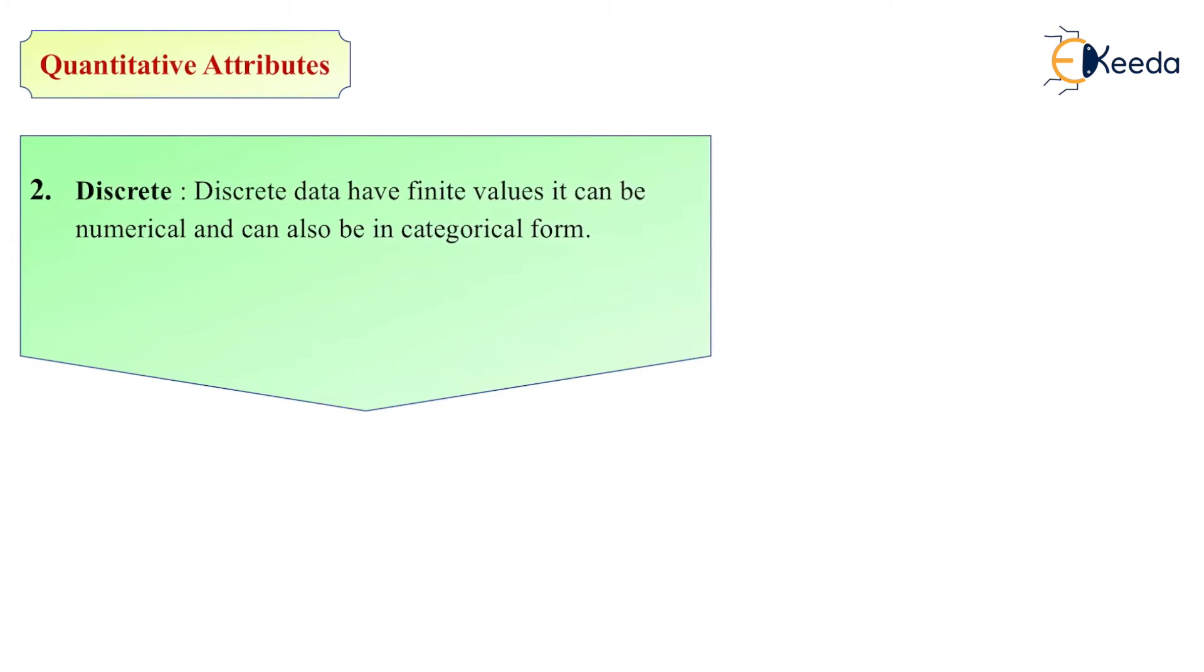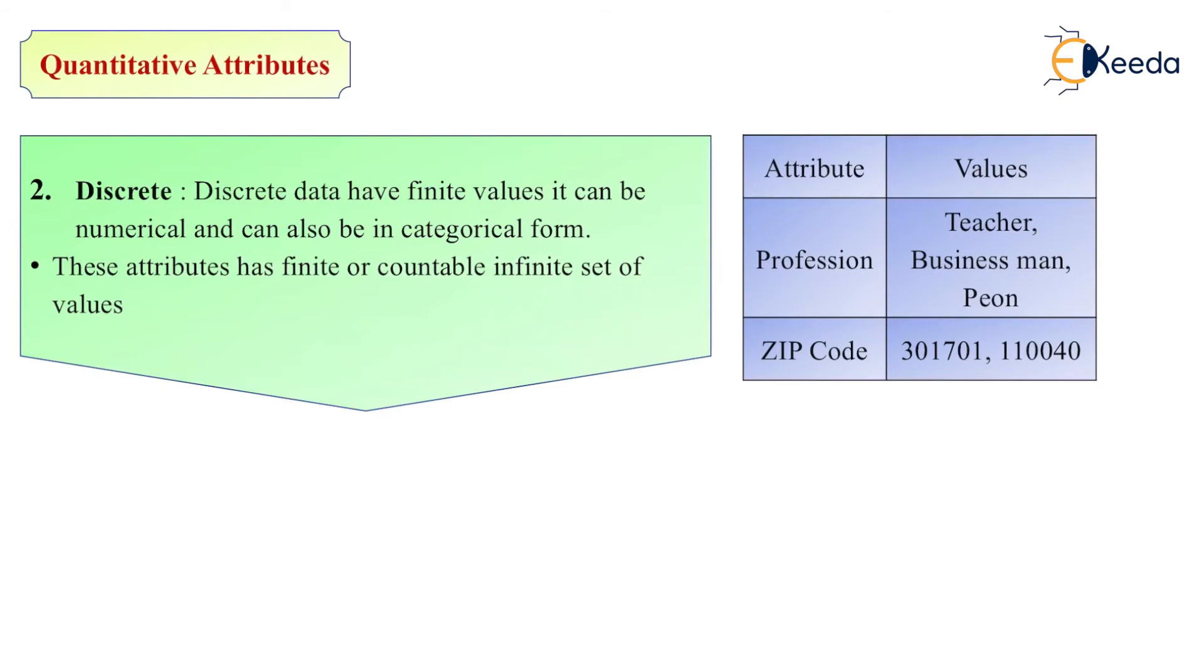Next is discrete type. Discrete data has finite values. It can be numerical and can also be categorical form, but we cannot change because it is a finite value. This attribute has a finite or countable infinite set of values. Like profession - teacher, businessman, peon. Then zip codes, consider 301701, 110040. We have some values which are finite values. We cannot change that value.